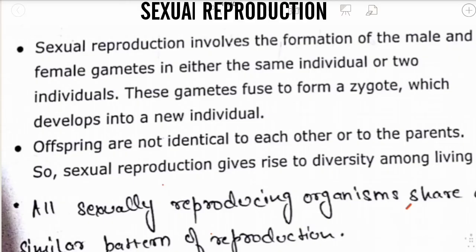We have already dealt with asexual reproduction. Asexual reproduction is the reproduction in which a single parent is involved, and the offspring produced are genetically as well as morphologically cloned to each other. Clone means similar.